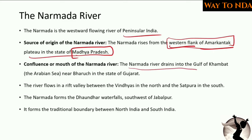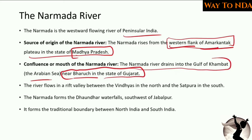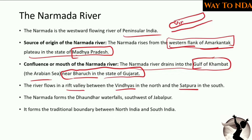The Narmada river drains into the Gulf of Khambhat, that is the Arabian Sea, near Bharuch in the state of Gujarat. The river flows in a rift valley between the Vindhya mountains to the north and the Satpuda mountains to the south.